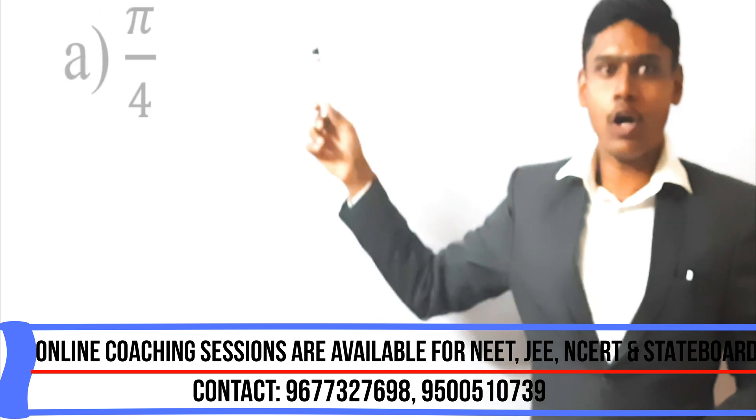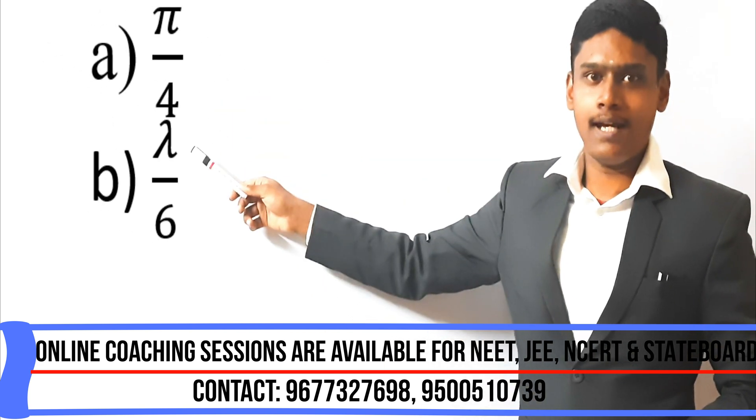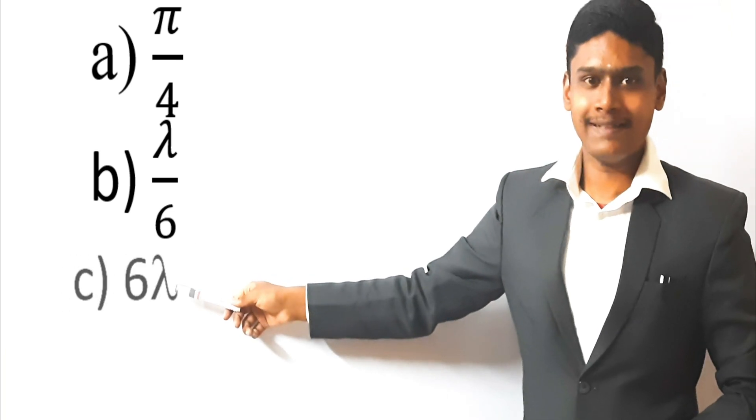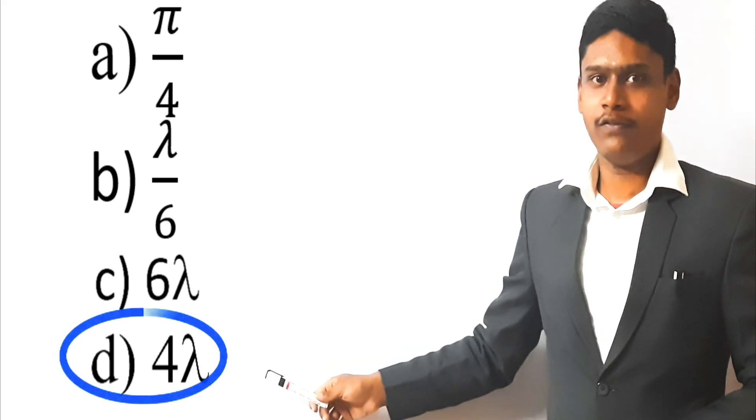Again, I will display the options on the board. Option A: lambda by 4. Option B: lambda by 6. Option C: 6 lambda. And option D: 4 lambda. The correct answer for this question is option D, 4 lambda which has been answered.